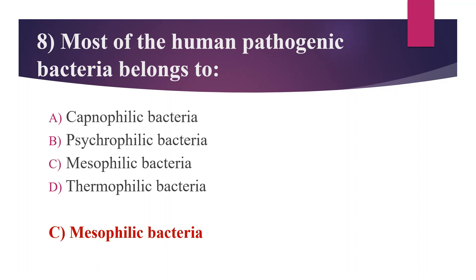Psychrophilic bacteria grow at temperatures ranging from minus 20°C to 20°C. Examples include Pseudomonas, Moraxella, Micrococcus species, Flavobacterium, and Cytobacter. Thermophilic bacteria can grow at high temperatures ranging from 41°C to 122°C, including Lactobacillus, Streptococcus thermophilus, and Bifidobacteria.